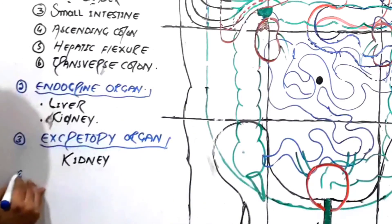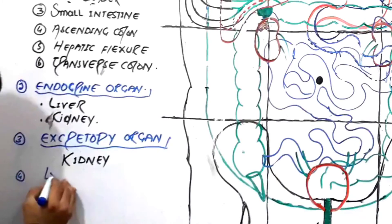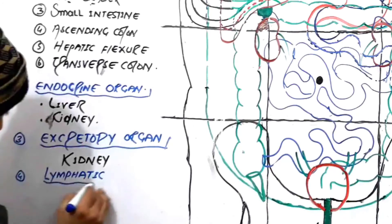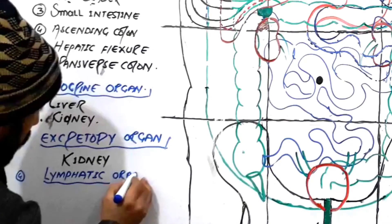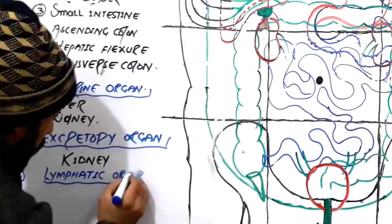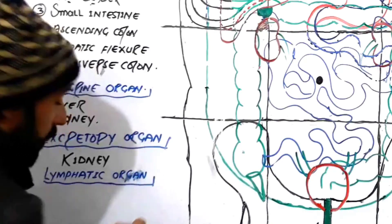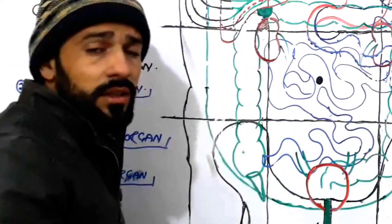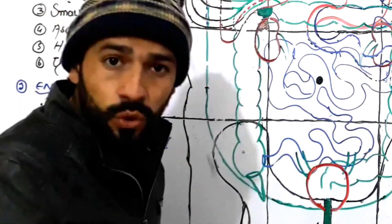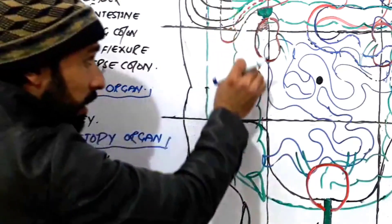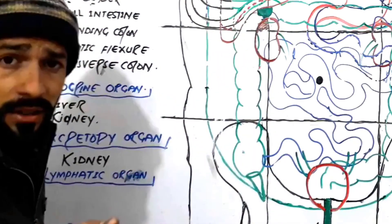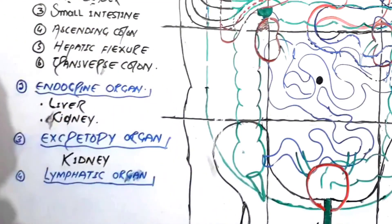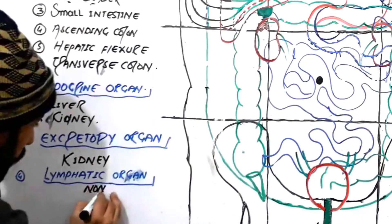Are there any lymphatic organs? No — there are no lymphatic organs in the right hypochondric region. There is a big difference between a lymphatic organ and a lymphatic node. Spleen is a lymphatic organ; thymus is a lymphatic organ. There may be small lymphatic nodes present, but no lymphatic organ is found there.